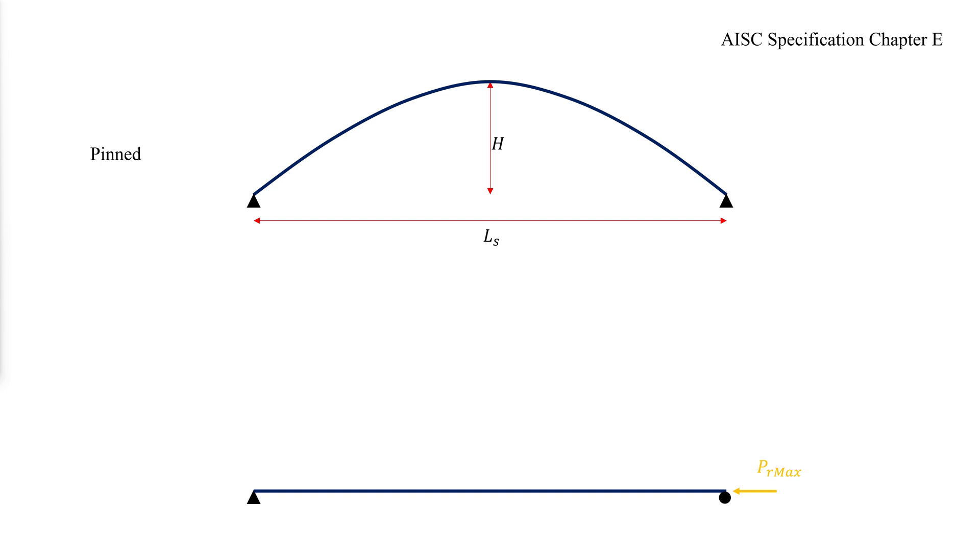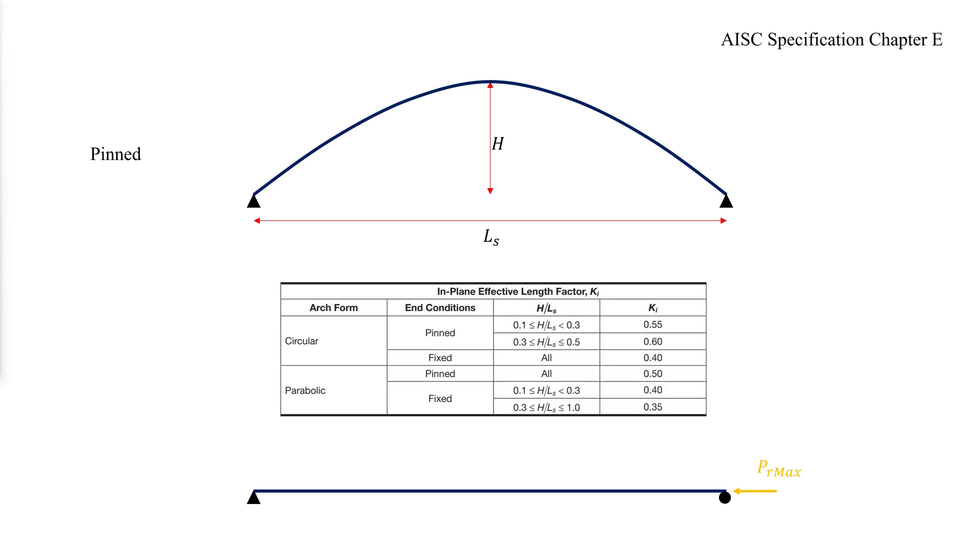The following table lists the appropriate effective length factors for use with the flexural buckling provisions in AISC specification Chapter E.